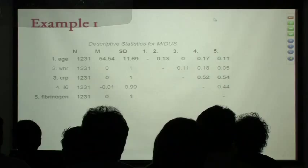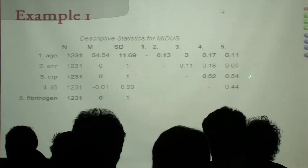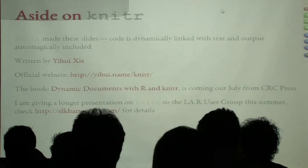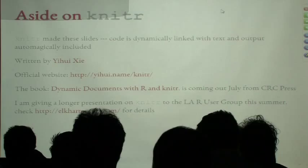Here's a descriptives table for each variable — number, standard deviation, and correlations. Quick aside: all of these slides were made using knitr, a great R package that allows you to put code in with your text or presentation and creates the output automatically. There's a book coming out in July, and I'll be giving a full-length talk on this to the LA R user group sometime later this summer.